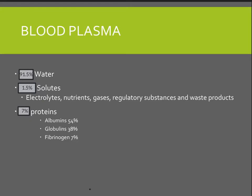The proteins are made up of 54% albumins, which are needed to help maintain blood osmotic pressure. Globulins make up 38% of the proteins and are antibodies, which help in our immune defense. Fibrinogen makes up 7% of the proteins, and these proteins are important because they help form blood clots.